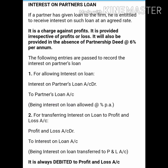Interest on partners' loan is a charge against the profits, and hence such interest is allowed whether there are profits or not. Interest on partners' loan is debited to the profit and loss account and not to the profit and loss appropriation account. Always remember that interest on partners' loan is a charge against profits and will be debited to profit and loss account even if the firm incurs a loss.